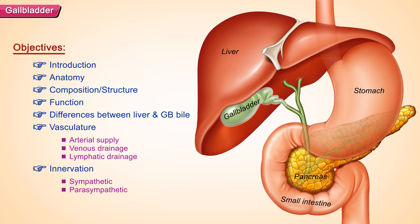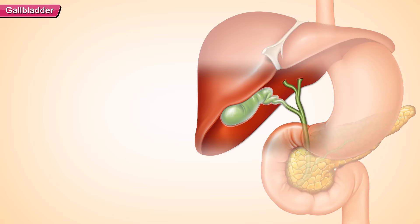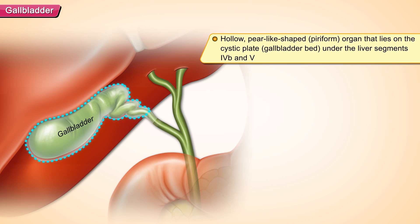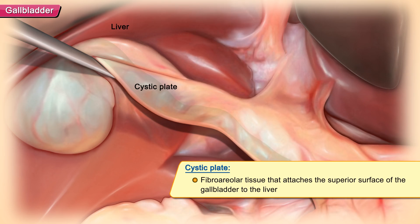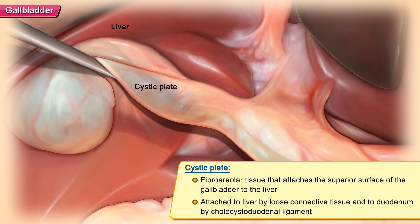Anatomy of the gallbladder. The gallbladder is a hollow, pear-like shaped pyriform organ that lies on the cystic plate or gallbladder bed under the liver segments, and primarily functions as a reservoir for bile. The cystic plate is a fibroareolar tissue that attaches the superior surface of the gallbladder to the liver. It is attached to the liver by loose connective tissue and to the duodenum by the cholecystoduodenal ligament.